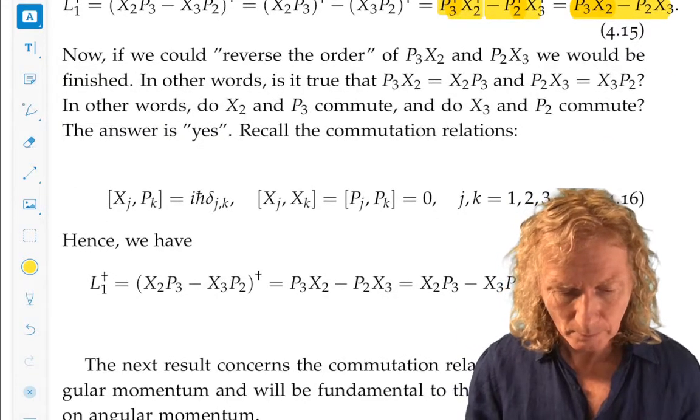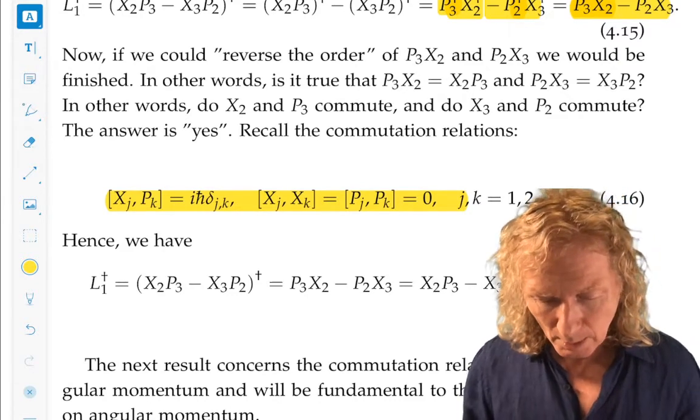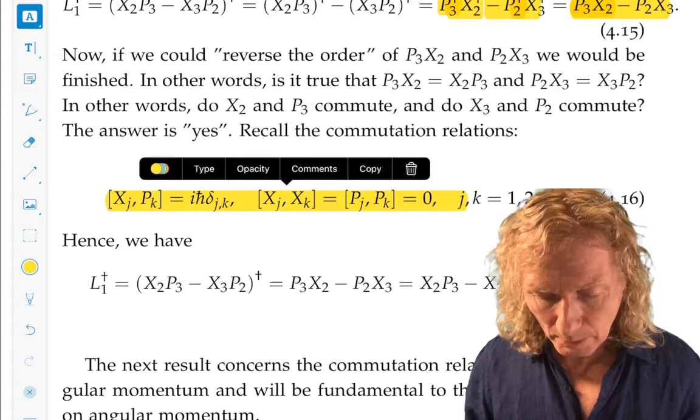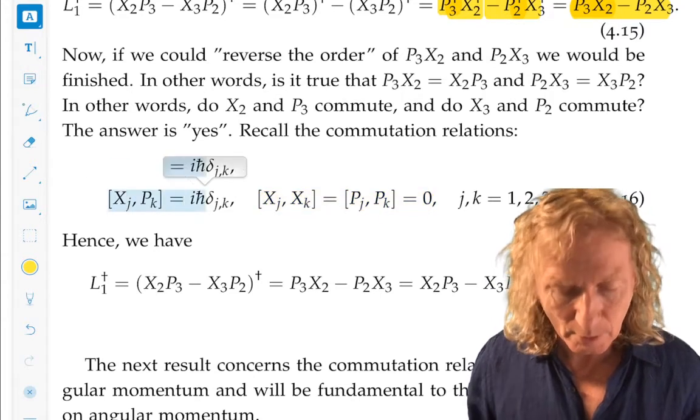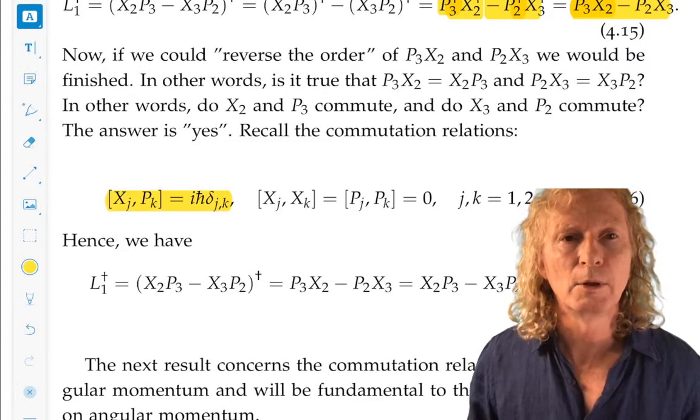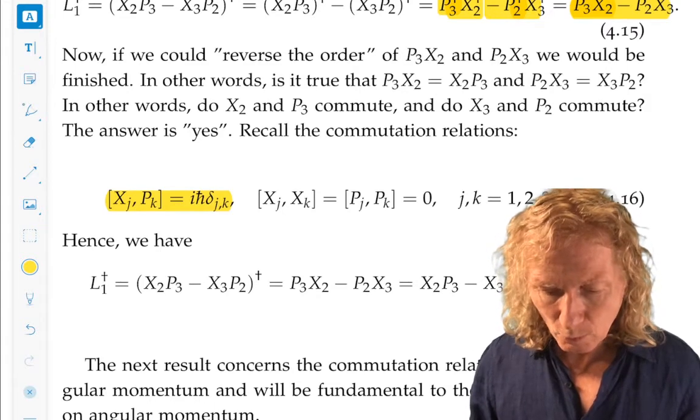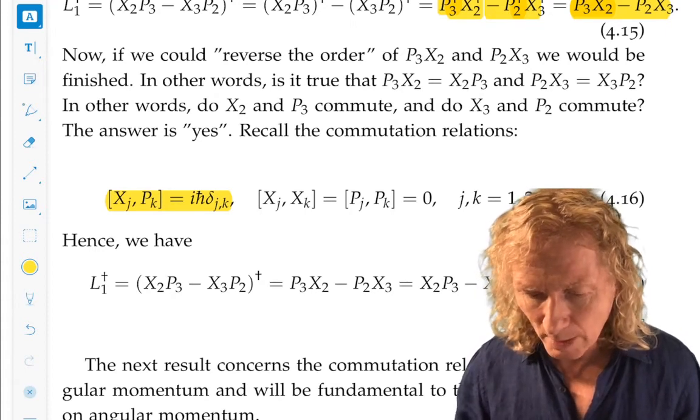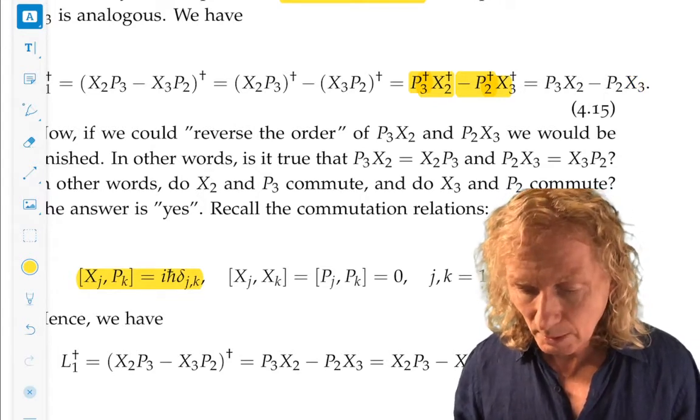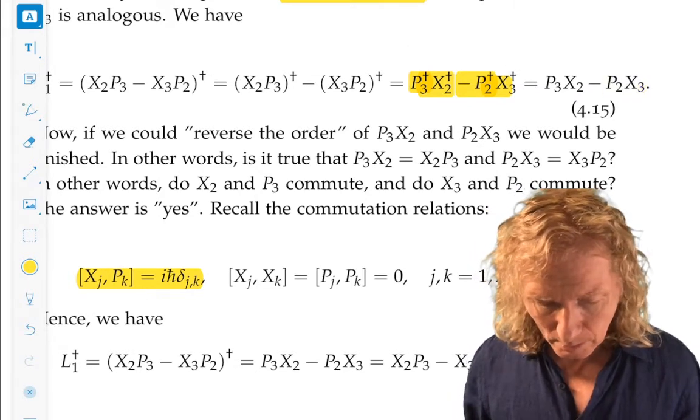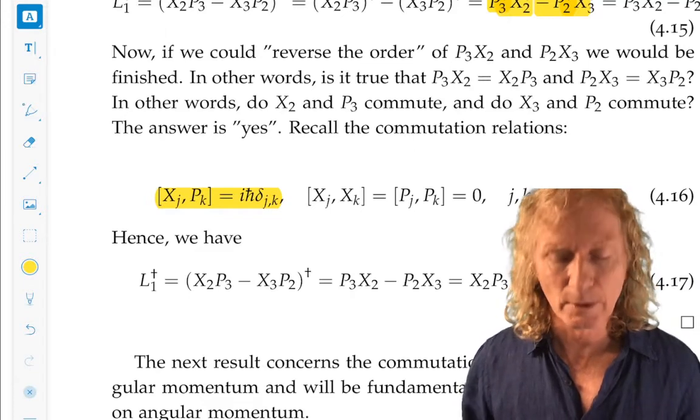But remember what we had earlier. The commutation relations for, in three dimensions, for the components of the position operator and components of momentum operator. The components of position and the components of momentum, they commute with themselves. And different components of position and momentum commute with themselves. So if we use that, we immediately see that we can reverse the order of X2, P3 and X2, because different components commute, and P2 and X3, different components commute. And so, in that way, we've shown that L1 is self-adjoint, and we can do the same similar arguments with the other two components.